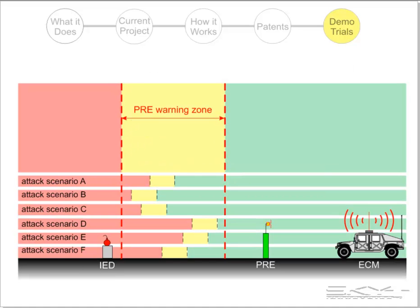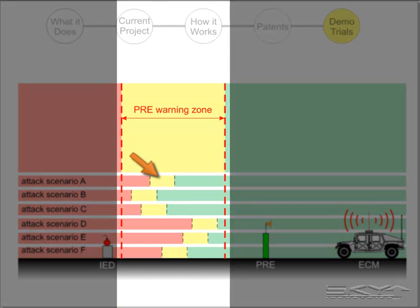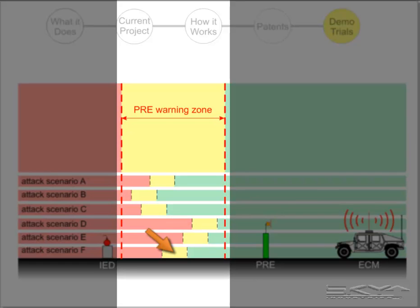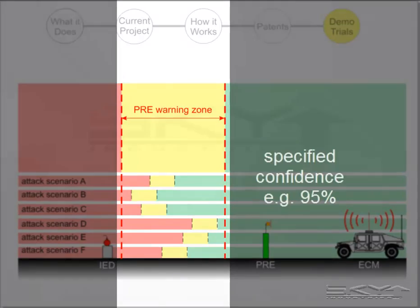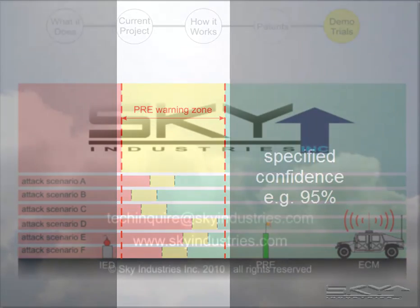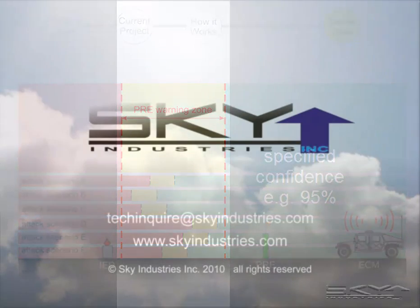In summary, the PRE device warning zone encompasses all possible ground truth protection range values with a specified confidence. This concludes the explanation of the PRE warning zone.